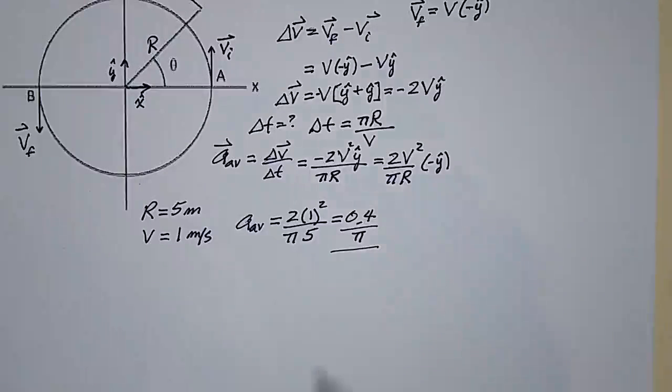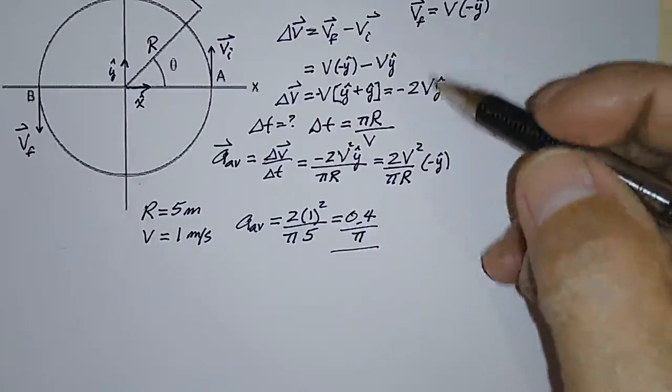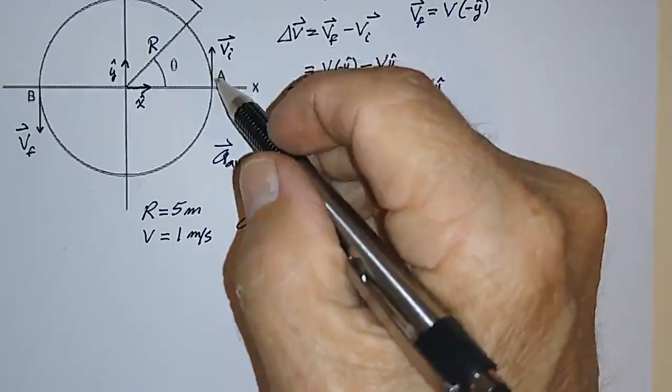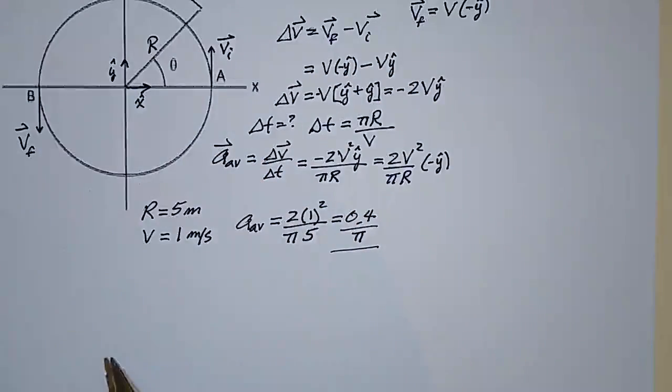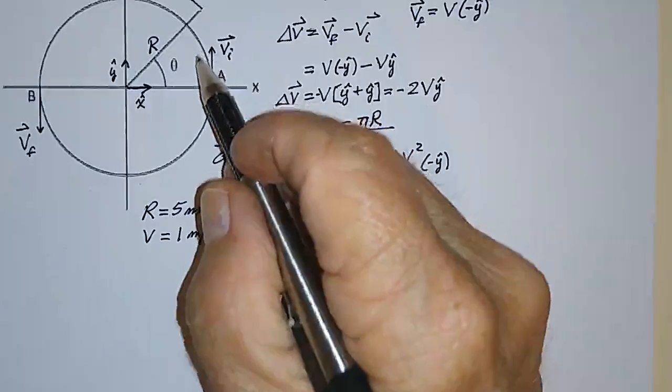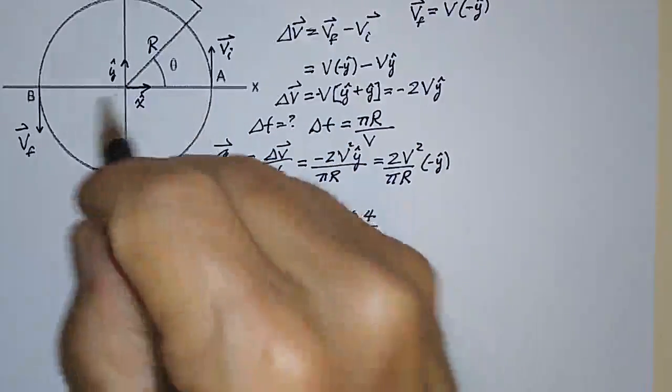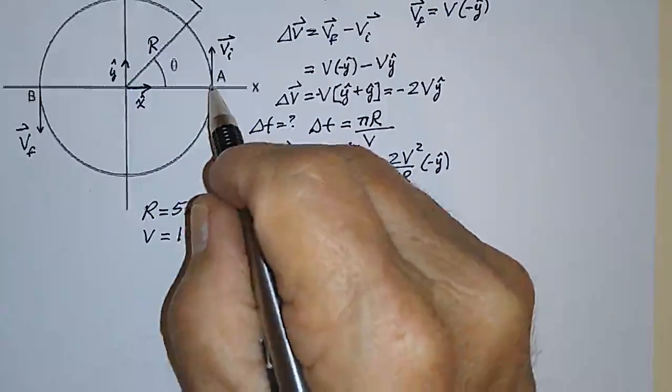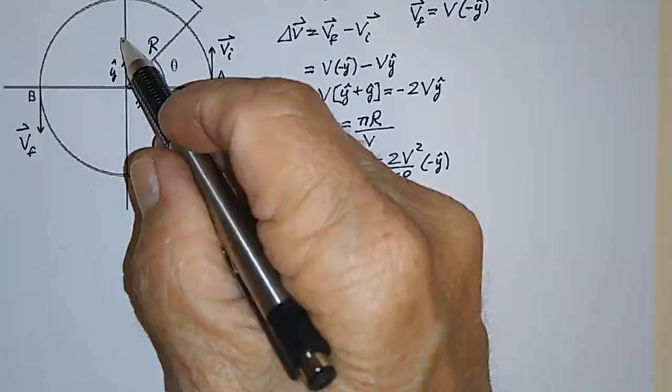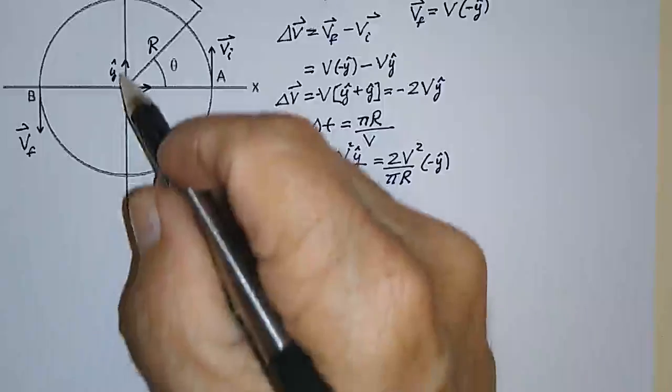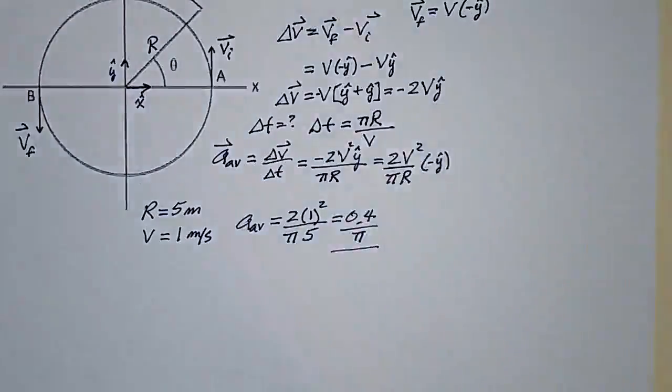Just one more thing to notice about this problem, just so you can get a little bit better idea of what it's about. Notice that the velocity starts out in this direction and ends up in this direction. So the whole time the velocity is changing, it's changing in such a way that it ends up in this direction when it started out in that direction. So that right there would tell you intuitively that the acceleration should be in the minus Y direction, which is what the mathematics actually shows you here.